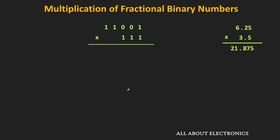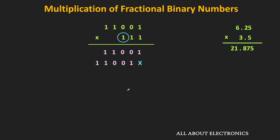But first, let us multiply these two numbers. Starting from the LSB of the multiplier, the first digit is equal to 1. Therefore, the first partial product will be same as the multiplicand — that is equal to 11001. Now if we move to the next bit, that is also equal to 1. So the next partial product will be same as the multiplicand but left shifted by 1 bit position. And moving towards the MSB, that is also equal to 1. So the next partial product will again be same as the multiplicand but left shifted by 1 bit position. So in this way, we got all the partial products.